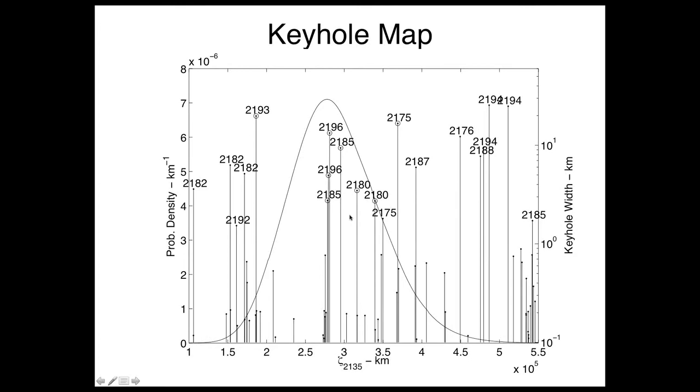At the same time, we can plot the probability distribution in the zeta space based on our current orbital uncertainties. So what you have is a very elegant depiction where you can take, for example, the 2175 keyhole. The width there is about 17 kilometers, and it crosses the probability density at that value of zeta of 2.5 times 10 to the minus 6. So you can immediately compute the impact probability for that keyhole of 4 times 10 to the minus 5. This is a complete picture of what's happening on the B plane in 2135.